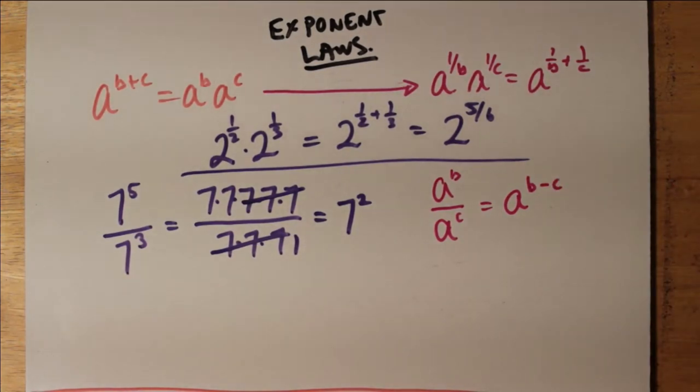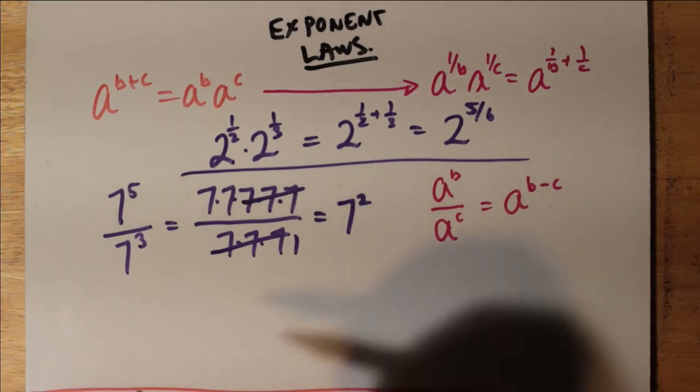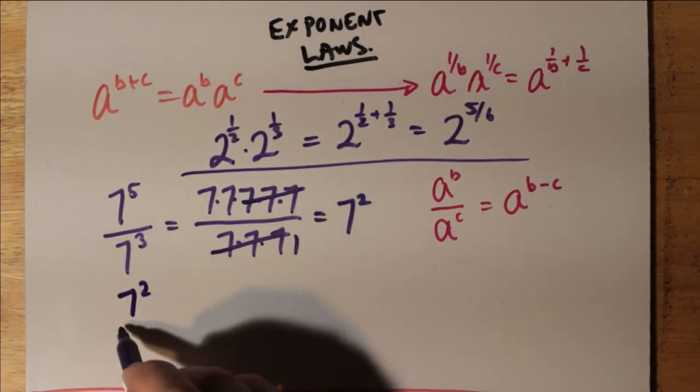But this is kind of like saying 5 minus 3 is 2, right? 7 to the 5 minus 3 also gives you 7 squared. So as a general rule, a to the b divided by a to the c is a to the b minus c.